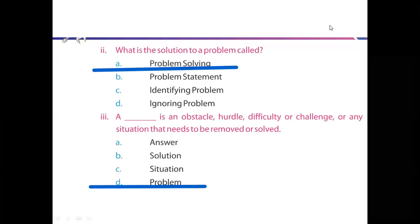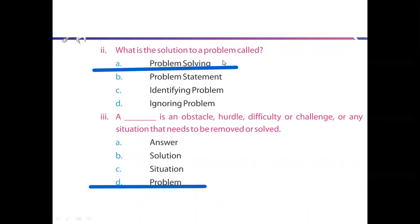Part number 2 is: what is the solution to a problem called? Students, in this chapter we have discussed the process of problem solving. We have discussed flowchart in detail. So option A is the right option. Mark it.